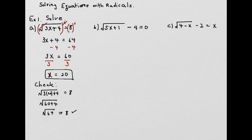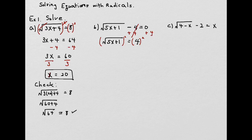For the next problem, remember: whenever you start a radical equation, first isolate the radical by itself on one side. Here you have the radical minus 4, so add 4 to both sides to get the square root alone. Then you have square root of 5x plus 1 equals 4. Now square both sides to eliminate the square root, giving you 5x plus 1 equals 16.